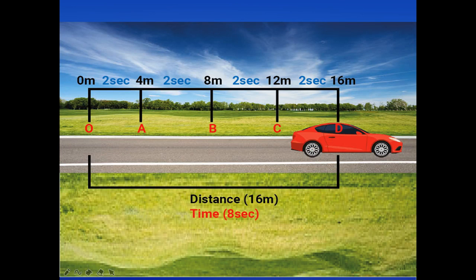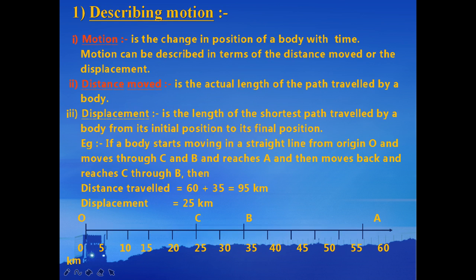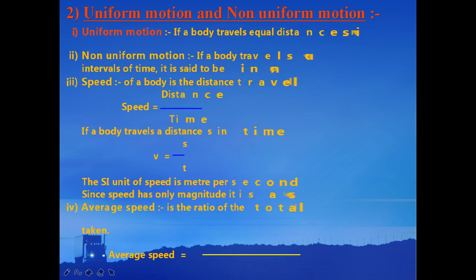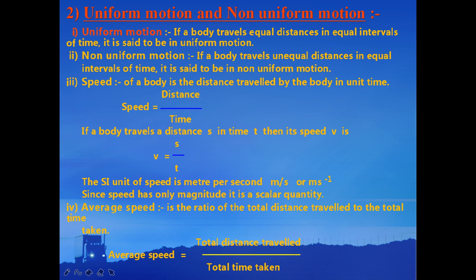Motion can either be uniform or non-uniform. In uniform motion, an object travels equal distances in equal intervals of time. In non-uniform motion, an object or body travels unequal distances in equal intervals of time. We are going to discuss examples of these in the coming slides.